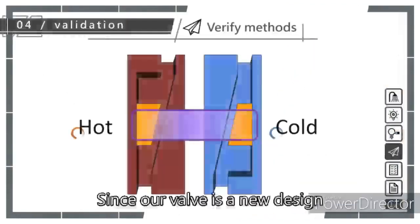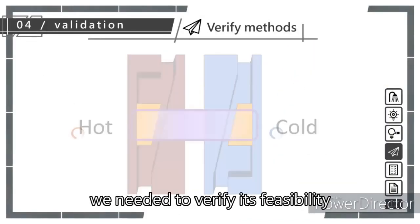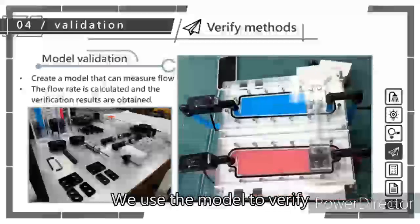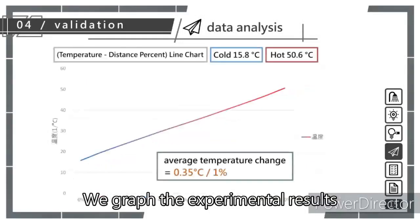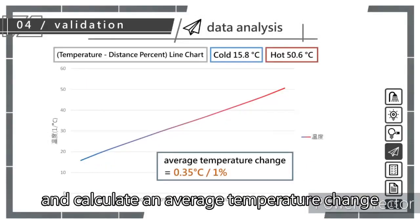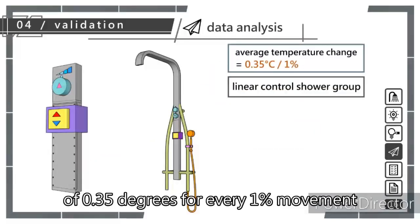Now I'll explain the validation. Since our valve is a new design, we needed to verify its feasibility. We used the model to verify. We graphed the experimental results and calculated an average temperature change of 0.35 degrees for every 1% movement.